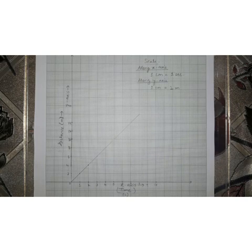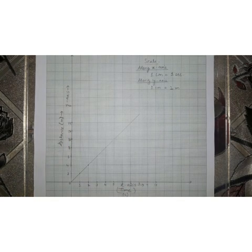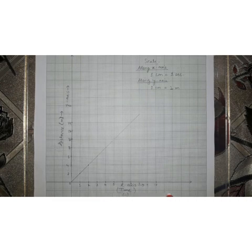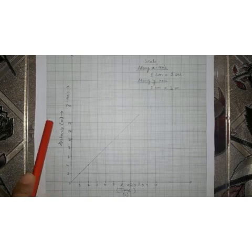For drawing line graph, we should know that a graph has two axes, x-axis and y-axis. Both are perpendicular to each other and each line represents one quantity. In distance time graph, the horizontal line represents time axis while the vertical line represents distance axis.